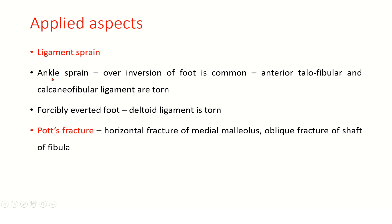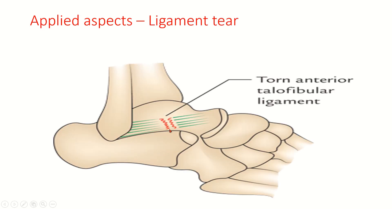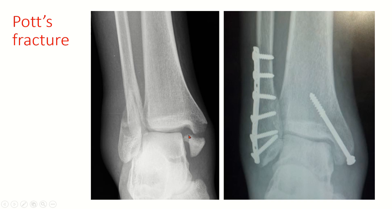Applied aspects: ligament sprain — ankle sprain due to over-inversion of the foot is common and causes damage to the anterior talofibular and calcaneofibular ligaments. In a forcefully everted foot, the deltoid ligament is torn. Pott's fracture is a horizontal fracture of the medial malleolus and an oblique fracture of the shaft of the fibula — a bimalleolar fracture. The fracture is openly reduced and internally fixed with screws.